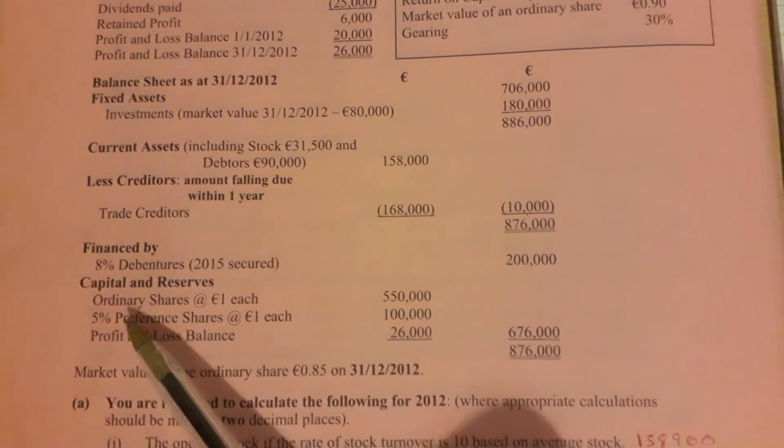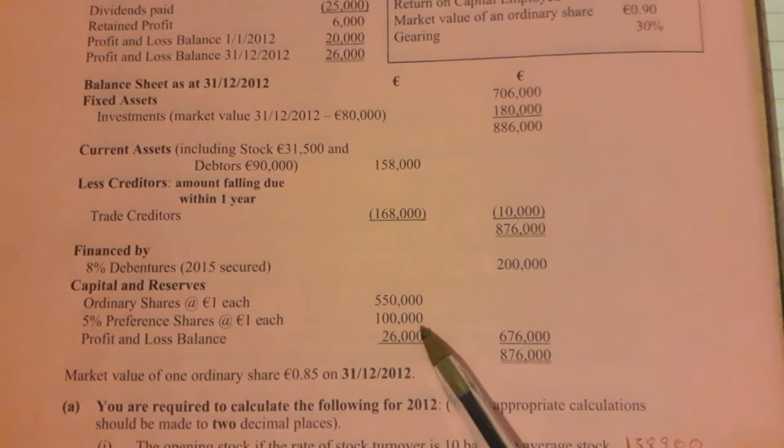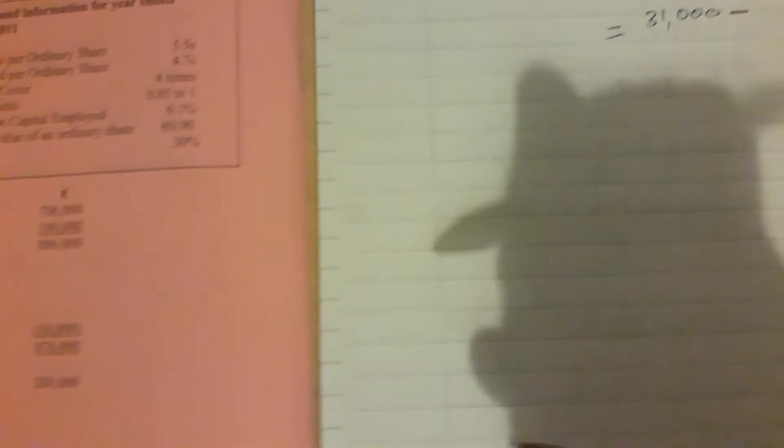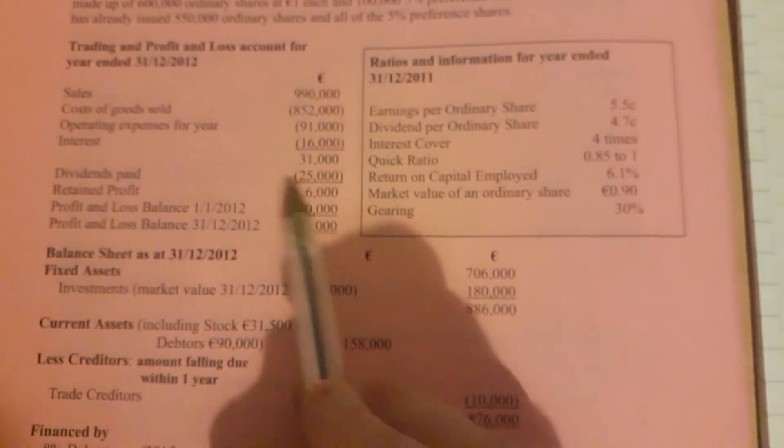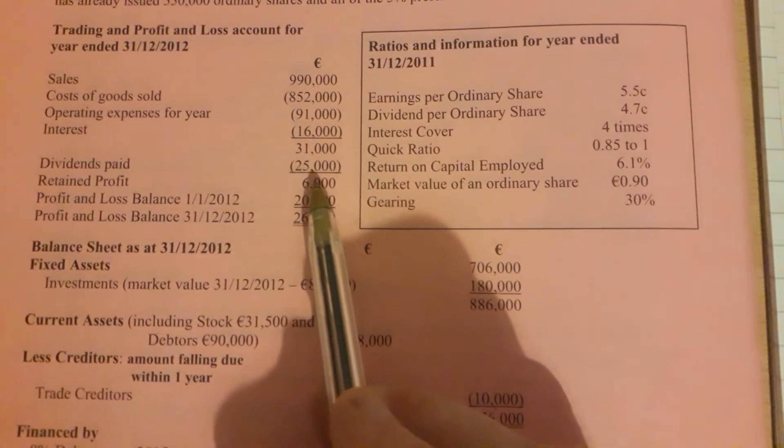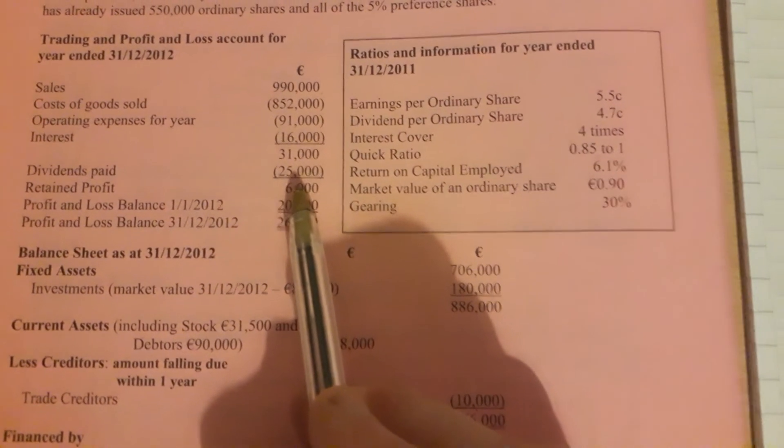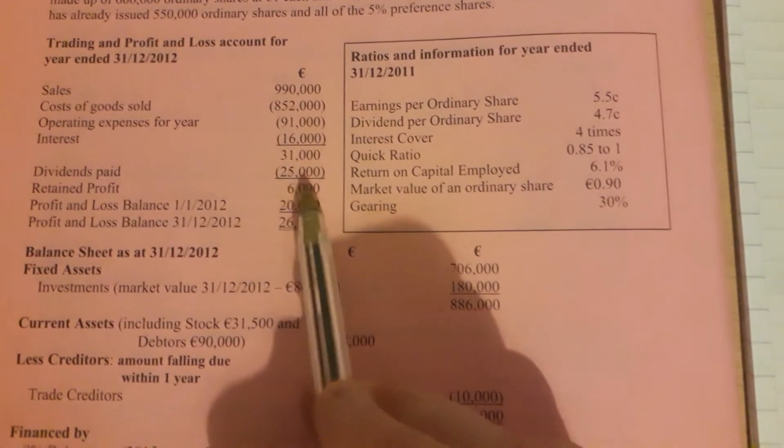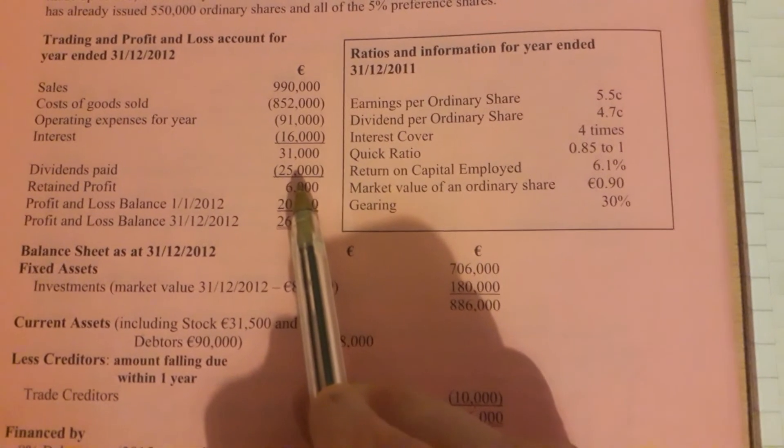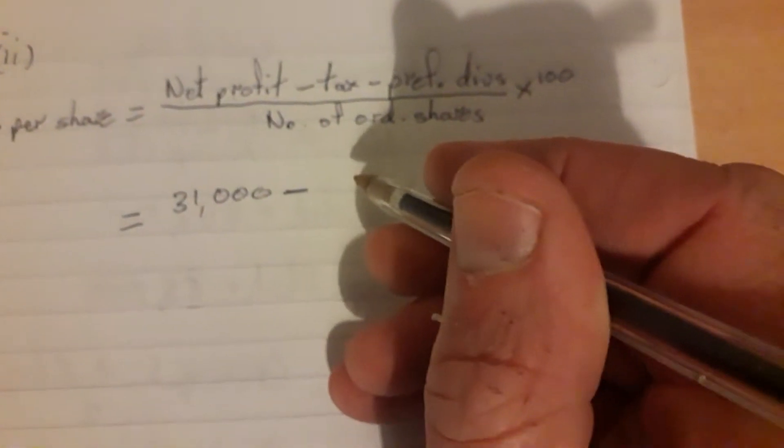Which means the amount that should be paid out in dividends for these preference shares is five percent of this one hundred thousand figure. So five percent of one hundred thousand is five thousand. So if the dividends paid were twenty-five thousand and we know the preference dividends are five thousand, we could work out that the ordinary dividends paid out are twenty thousand. In this case we don't need it yet, but later on in the question we may.